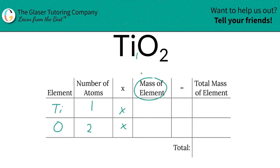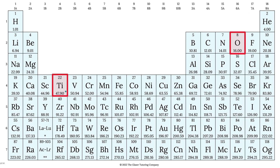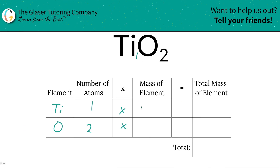Then we're simply going to multiply those number of atoms by the mass of each element. These masses are always found in the periodic table. 47.90 for titanium, oxygen is 16. So let's write that in: 47.90 for titanium, oxygen is 16.